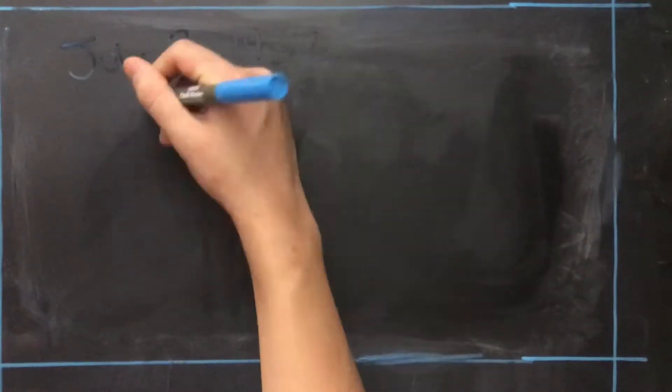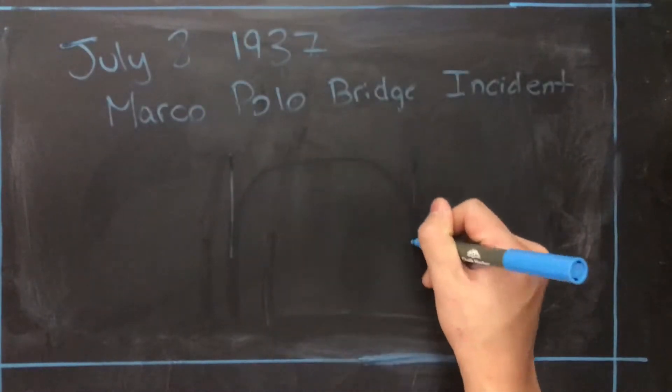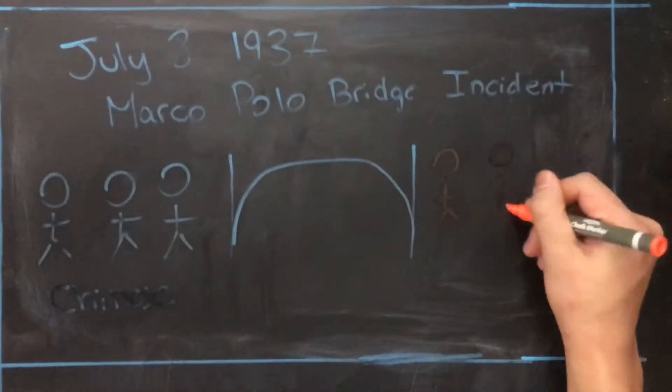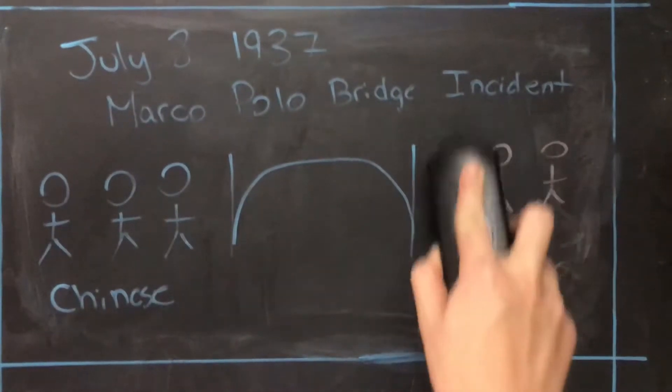On July 8th, a Japanese soldier went missing near the border of China and the newly established Japanese colony of Manchukuo. Although the soldier returned mere hours later, both the Chinese Army and the Japanese Army refused to back down or negotiate.